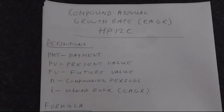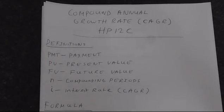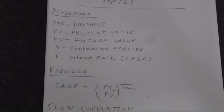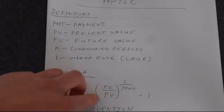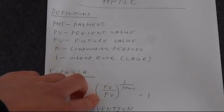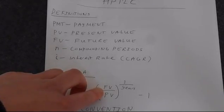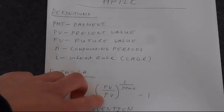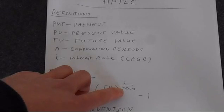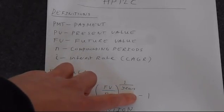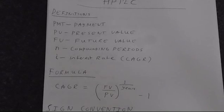Essentially, we're doing a time value of money calculation and solving for I. The formula for the compound annual growth rate is shown. You could do this on a scientific calculator. You've got your future value divided by present value to the power of one over years. This is a sort of root, and then you're subtracting one from that.